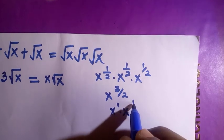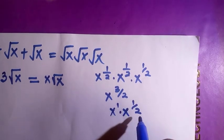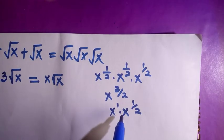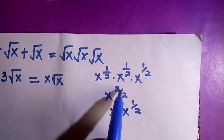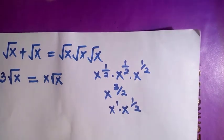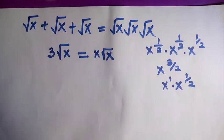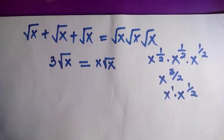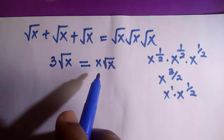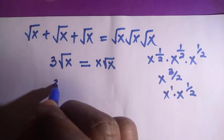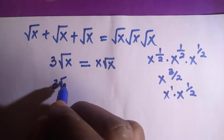We cut this — x raised to power 1 and x raised to power 1/2 — and apply the product law of indices, so we get x raised to the power of 3/2, which is the same thing as x√x. Now by transferring x√x to the left side, we have 3√x minus x√x equals zero.